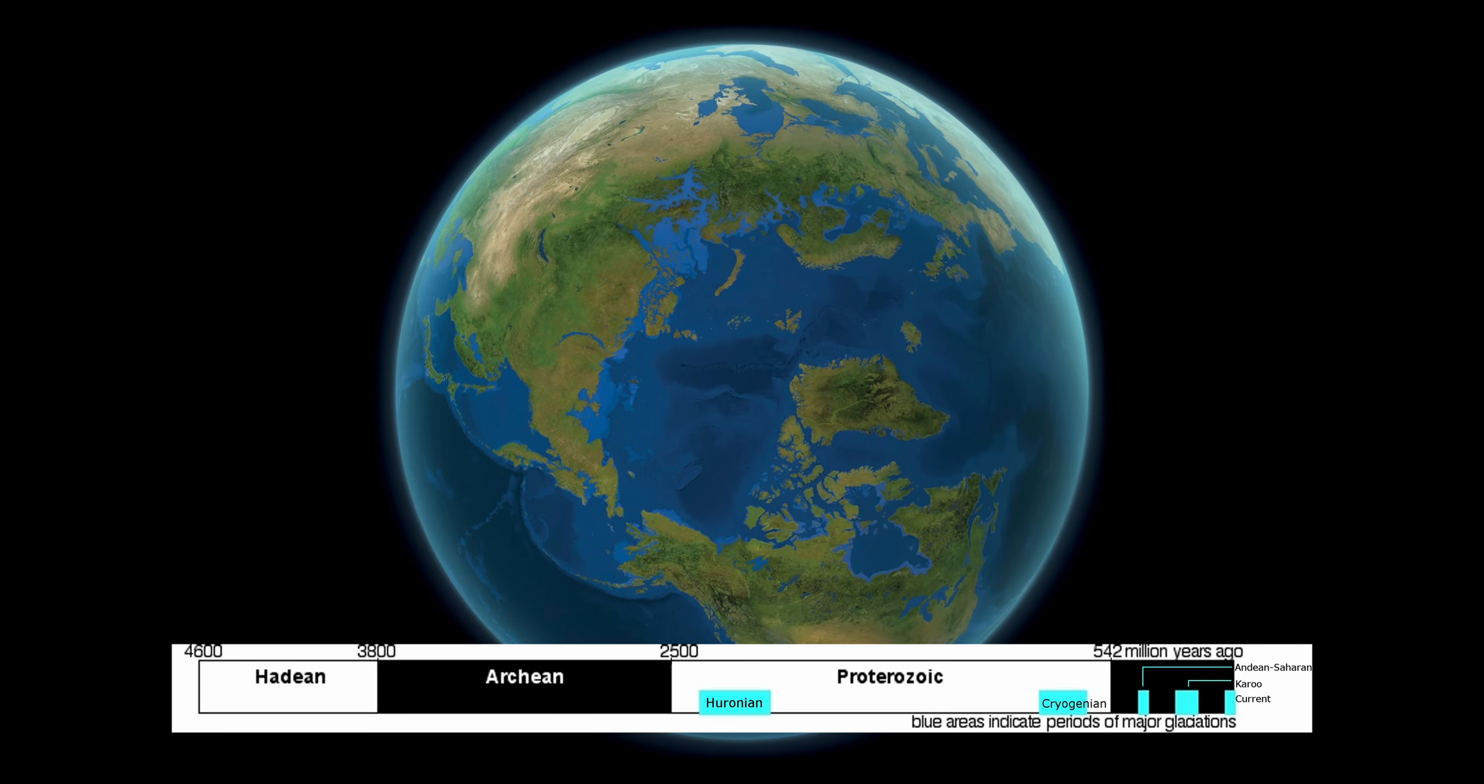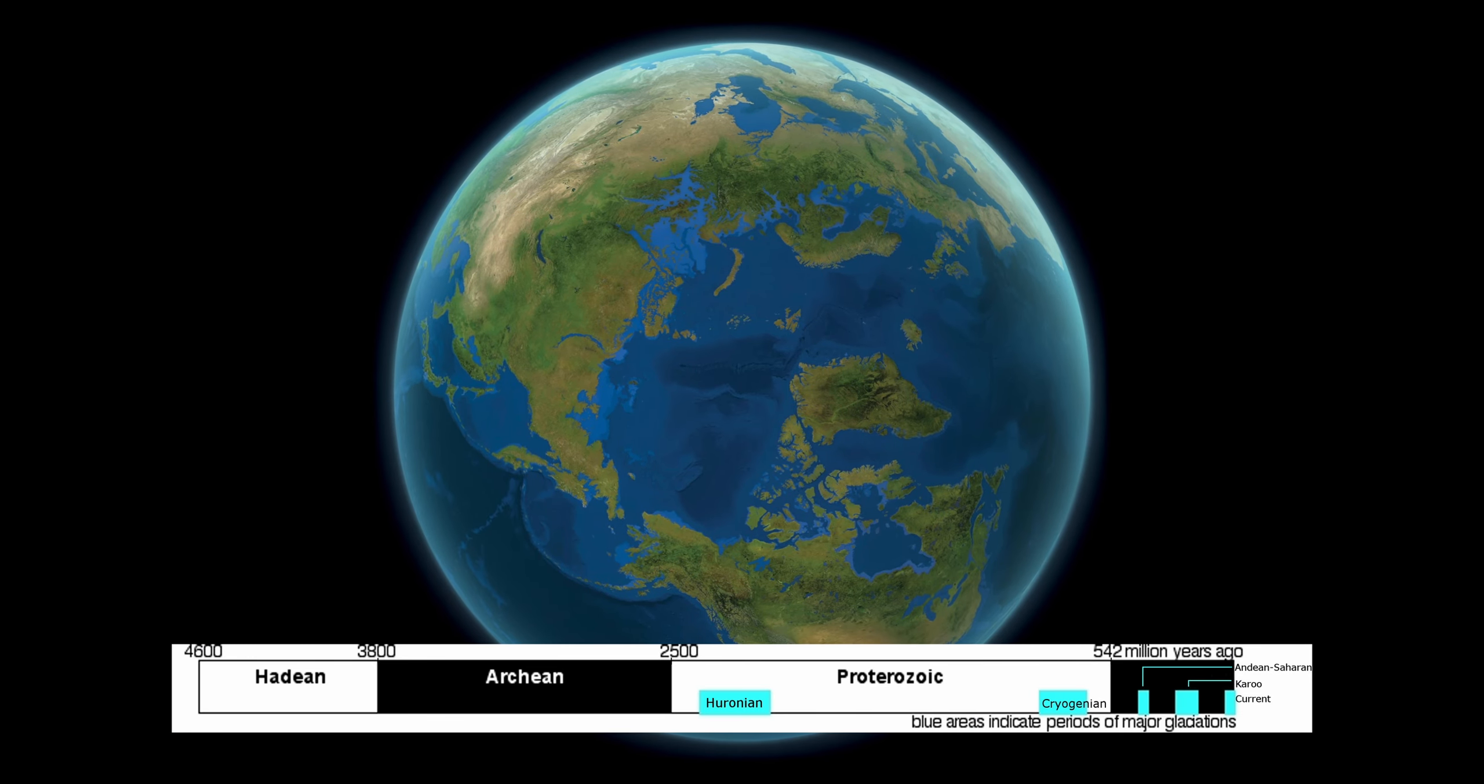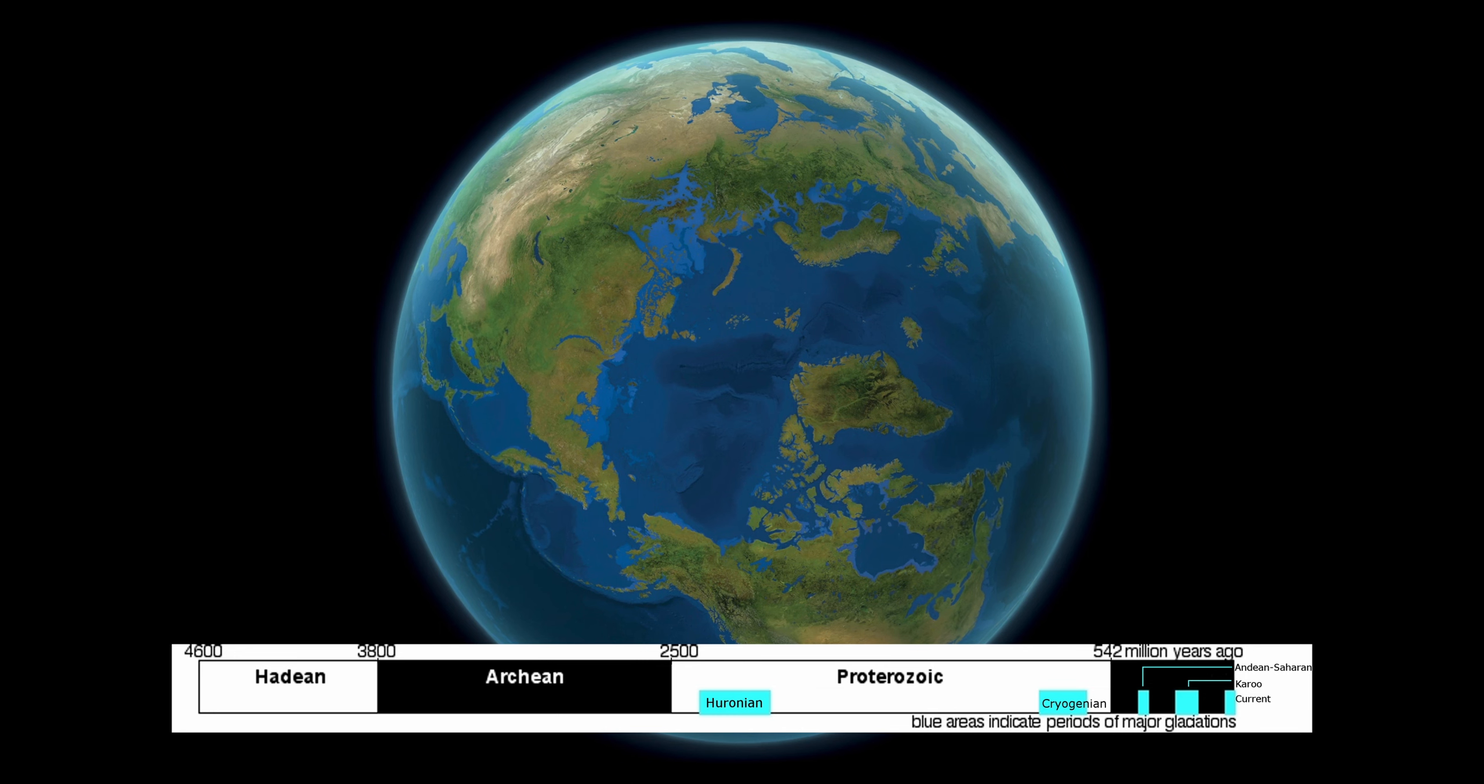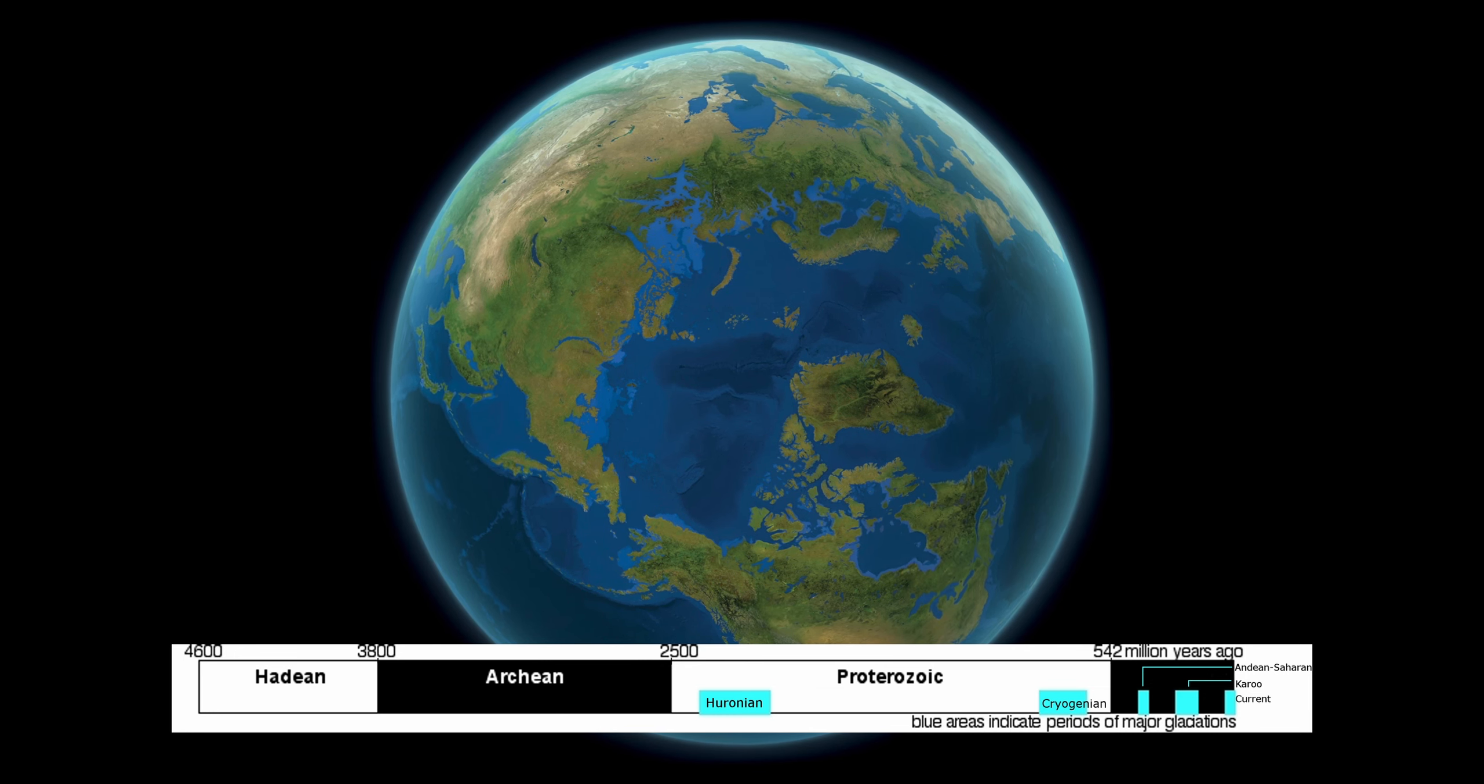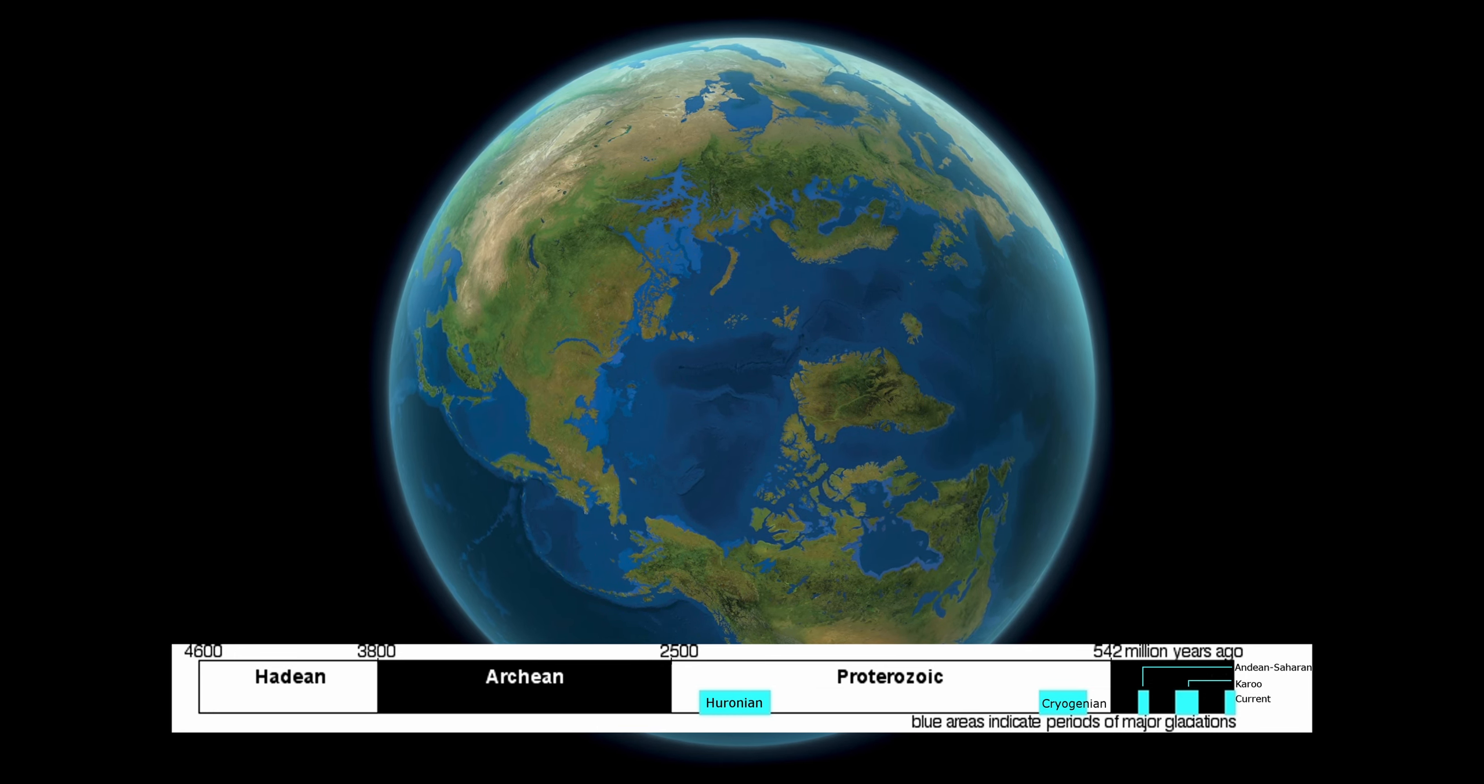It is simply divided into glaciation and interglaciation, which is where we are right now. Take a look for clarity. There is the chronology of our planet. And these little blue periods, these are the Ice Age. The rest of the time, no ice.